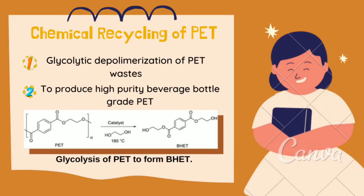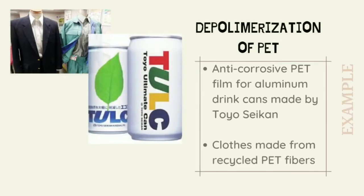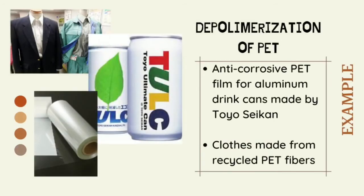This process can be used to produce high-purity beverage bottle grade PET in a closed-loop process with minimal waste. BHET goes through a melt-and-solid phase polymerization process that produces PET flakes, which can be turned into new PET bottles or higher value-added products, such as anti-corrosive PET film for aluminum drink cans made by Toyo Seacon. Clothes made from recycled PET fibers are displayed at the Minato Resource Recycle Center in Tokyo.